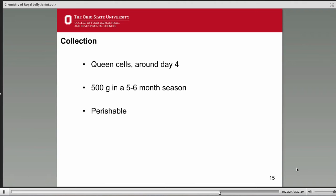Royal jelly is also perishable. When you think about the contents — sugars, proteins, and lipids — like any other foodstuff, it is perishable. So beekeepers who collect it have to either keep it frozen, and sometimes they even add some honey or beeswax as a preservative.